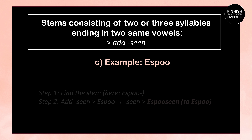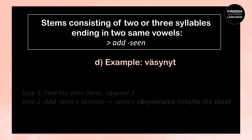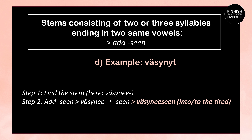Next example: Espoo. The stem is also Espoo. We add -seen: Espoo + seen = Espooseen, meaning to Espoo. Next: väsynyt, meaning tired. The stem is väsynee. We add -seen: väsynee + seen = väsyseeseen, which means to the tired.